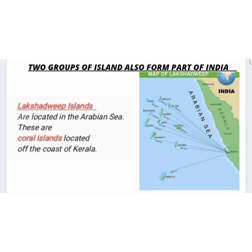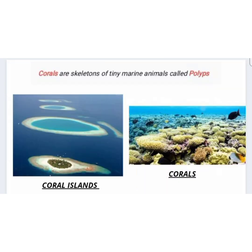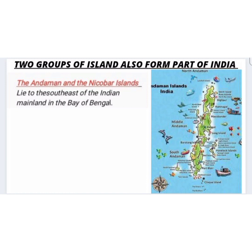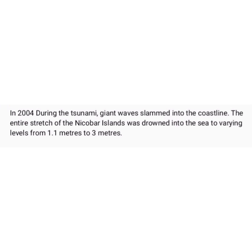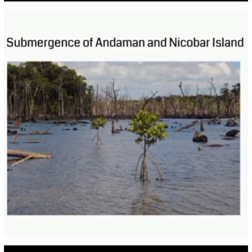Two groups of islands also form a part of India — Lakshadweep Islands and the Andaman and Nicobar Islands. Lakshadweep Islands are located in the Arabian Sea and are coral islands off the coast of Kerala. Corals are the skeletons of tiny marine animals called polyps. The Andaman and Nicobar Islands lie to the southeast of the Indian mainland in the Bay of Bengal. In 2004, during the tsunami, giant waves slammed into the coastline and the entire stretch of Nicobar Islands was drawn into the sea to varying levels from 1.1 meters to 3 meters.